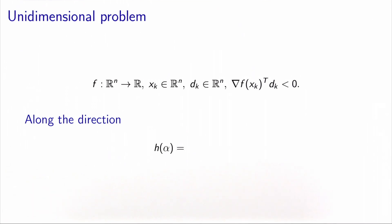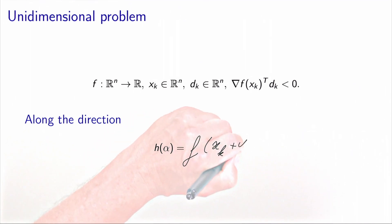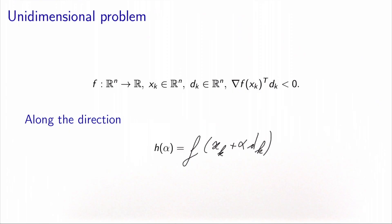The problem is the following. We have our function f that we try to minimize — a function of n variables. We have the current iterate xk and a direction dk, which is a descent direction, meaning the directional derivative of f along dk is strictly negative. Along the direction, our problem becomes unidimensional: the only decision to make is the step length alpha. We minimize a unidimensional function h defined as the value of f when we take a step alpha along dk starting from xk.